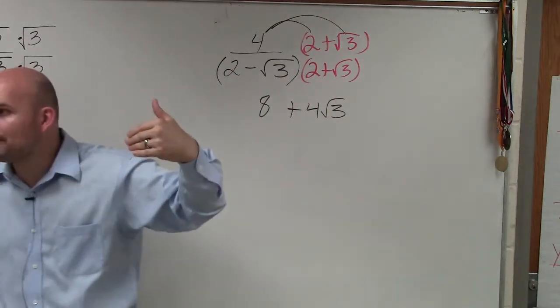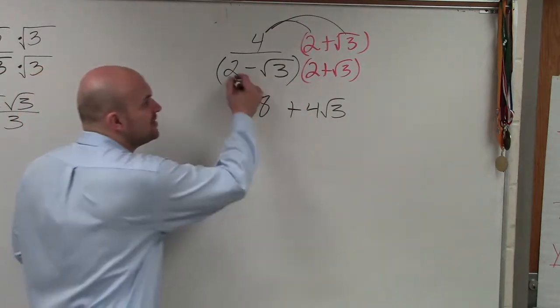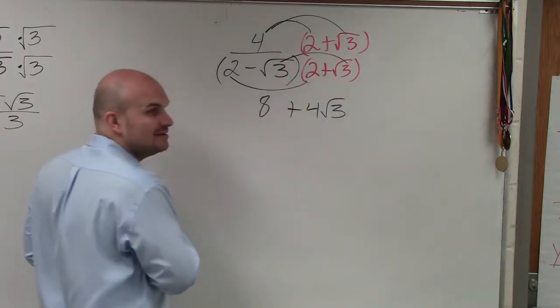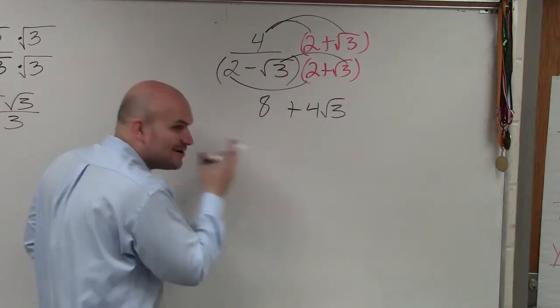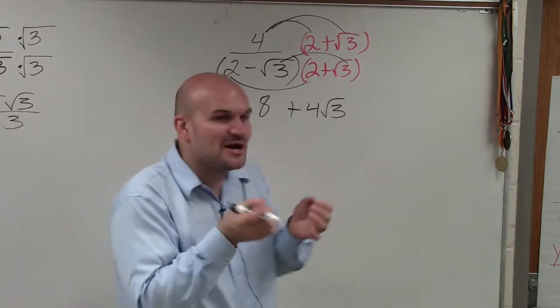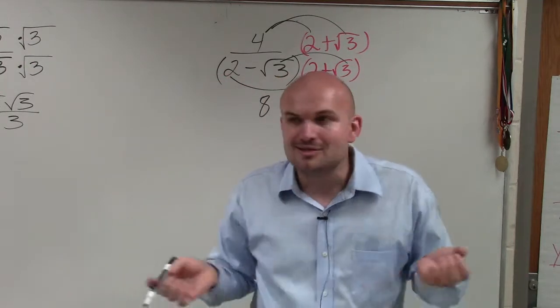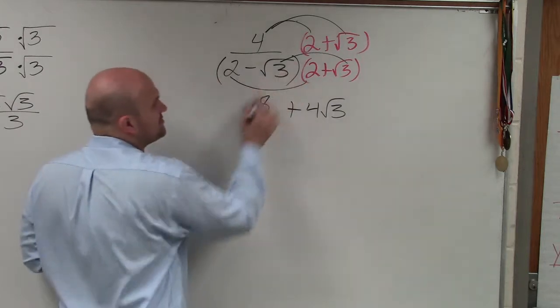If you remember, you don't have to do FOIL for this because the middle terms are going to add to what? Rhymes with pyro—zero. The two middle terms add to zero, so all I need to do is multiply the first two terms.